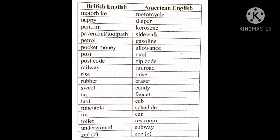Post — mail. Postcode — zip code. Railway — railroad. Rise: British spelling R-I-S-E, American spelling R-E-I-S-E. Rubber — eraser. Sweet — candy. Tap — faucet. Taxi — cab. Timetable — schedule. Tin — can. Toilet — restroom. Underground — subway. The last letter of the alphabet: British say 'zed,' Americans say 'zee.' These are the major changes in vocabulary.